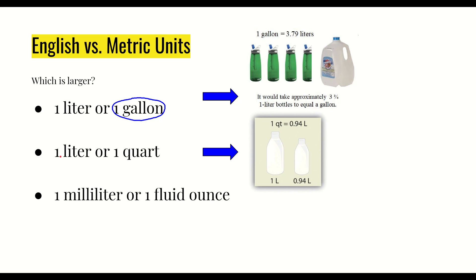Moving on to a liter versus a quart: one quart is 0.94 liters, which means one quart is just a little bit less than a liter. So in this comparison, a liter is going to be bigger because one quart is not quite worth as much as a liter. The image shown gives an idea of how much bigger one liter is compared to 0.94 liters, so we circle the one liter.